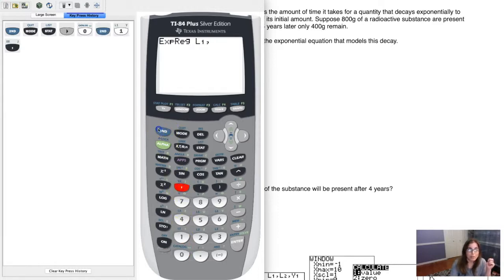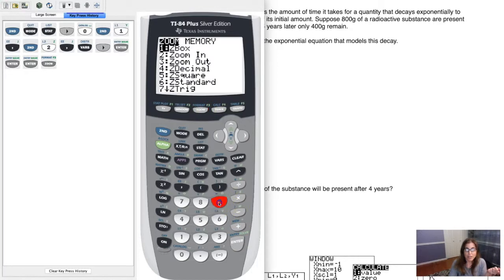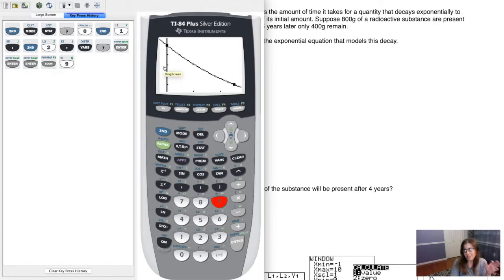Let me clear all of my keypress history out. Go back to your home screen. We're going to hit stat, go to calc, and scroll all the way down to option zero. You can scroll down to zero and hit enter, or I'm lazy—I'm just going to hit the zero button. That will pull up exponential regression. It's the same program: L1, L2. Let me put it into Y1. Then we get that output. There's our initial value. There's our exponential decay. We see our base is about 0.76, so this substance is decaying by about 24% per year.